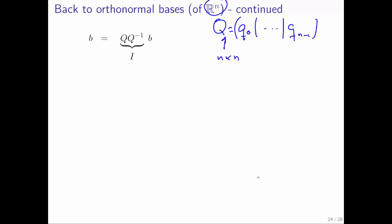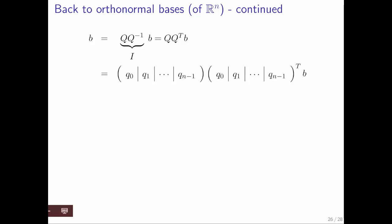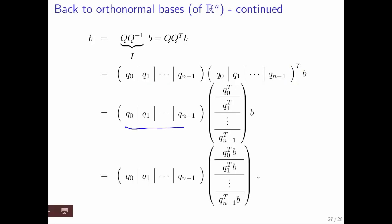Because it's a square matrix, and because it has mutually orthonormal vectors, in the homework you just did, you found out that Q inverse is just Q transpose. We can then write that as Q with its columns exposed, Q with its columns exposed but transposed, which gives you this right here.